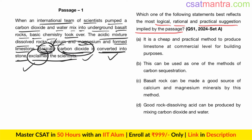Now, option A: 'It is a cheap and practical method to produce limestone at commercial level for building purposes.' The passage is not talking about limestone — it's talking about carbon dioxide. That is why the experiment was done. Commercial level, building purposes — this is not being discussed, so option A is incorrect.